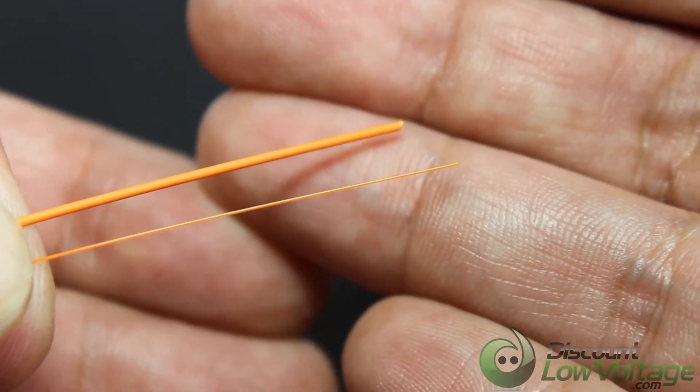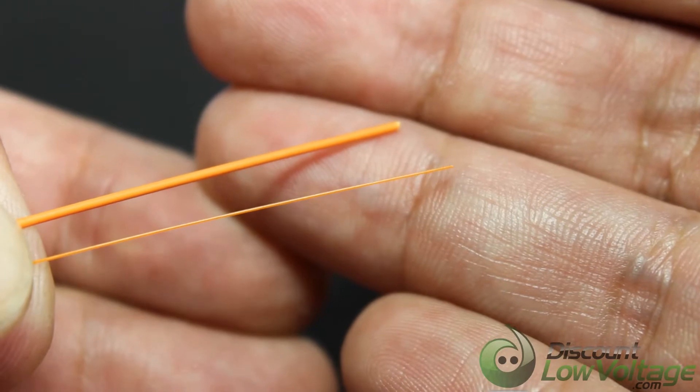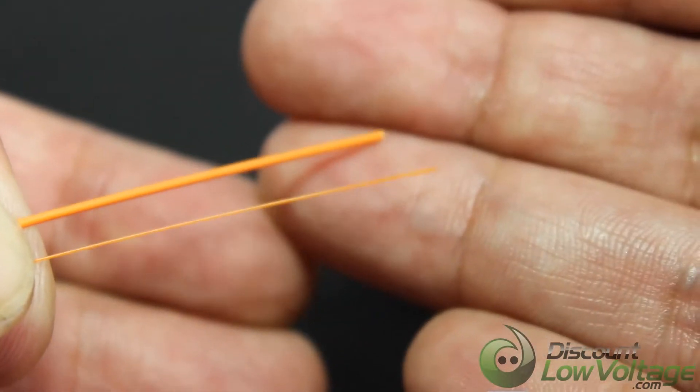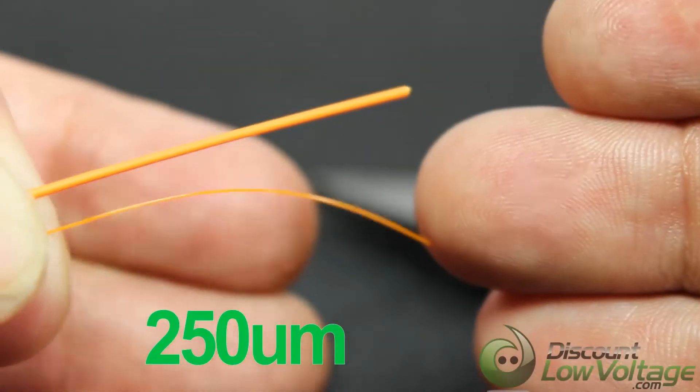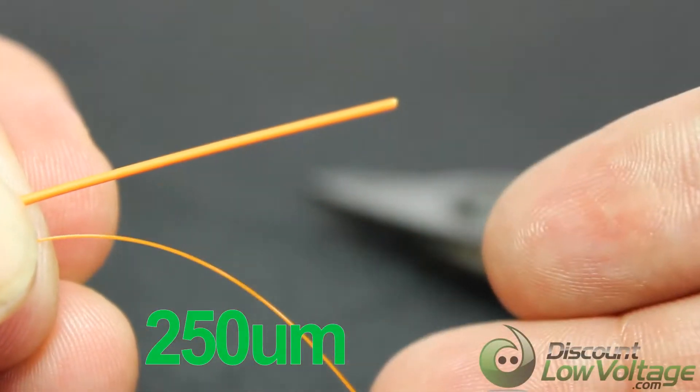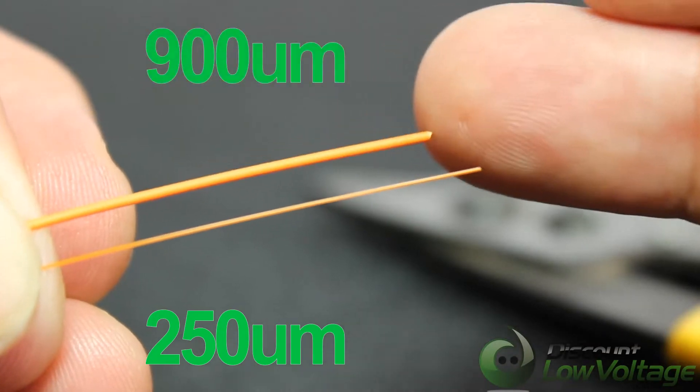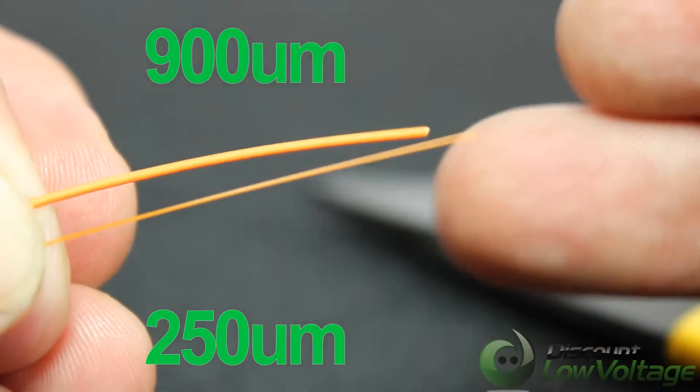Now you have two fibers, you have the buffer here. I just wanted to show you two different sizes. You have your 250, which is obviously small, and then you have your 900, which is also pretty small.